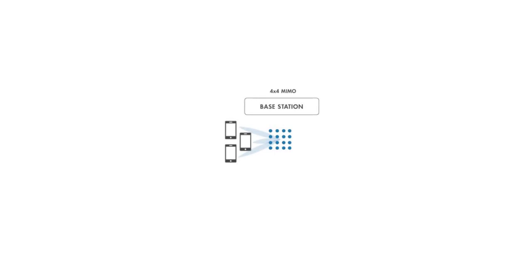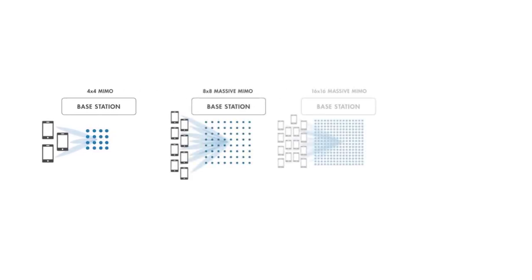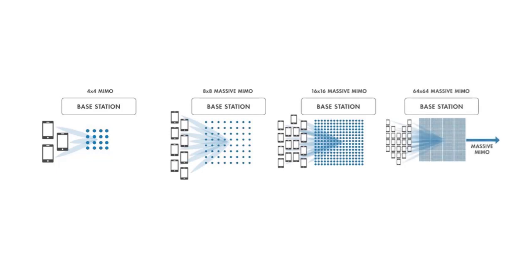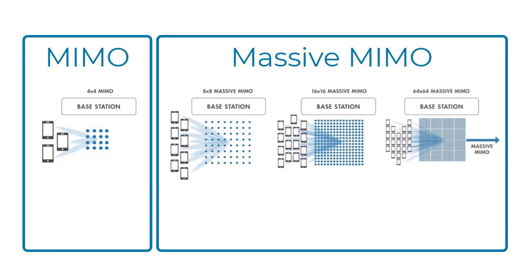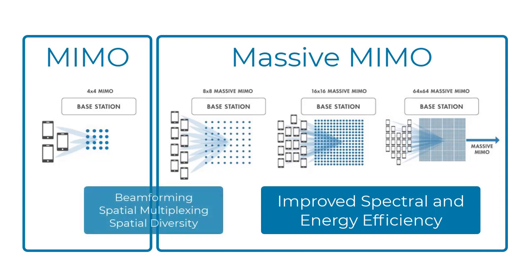Massive MIMO is a specific type of MIMO system that uses tens, hundreds, or even thousands of antennas in an antenna array. It enables more spatially focused communication, which improves the spectral and energy efficiency of the wireless system. It exploits fundamental MIMO concepts such as beamforming, spatial multiplexing, and diversity. For these reasons, it is emerging as a technology used in 5G wireless systems.